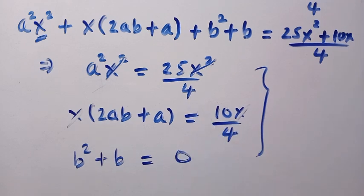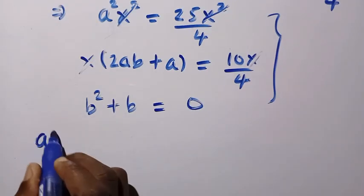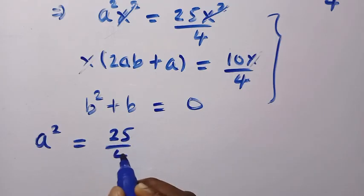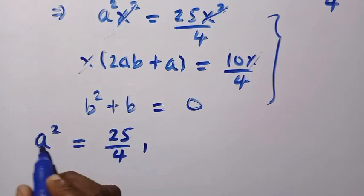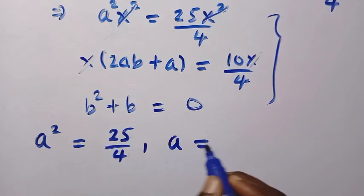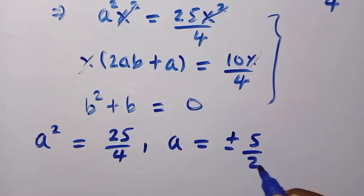But let's start with the first one. We are going to have a squared equals 25 divided by 4. And by taking the square root of both sides, we have a which is equals plus or minus 5 divided by 2. This is for the value of a.